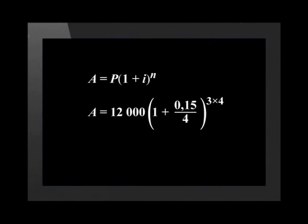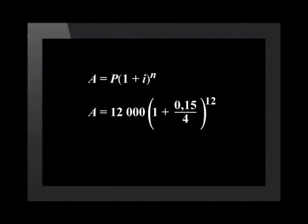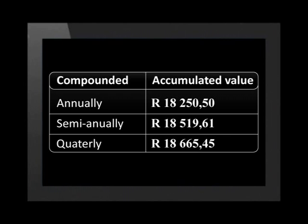Interest is calculated four times a year, so we divide the interest rate by four. A is equal to 12,000 times (1 + 0.15 divided by 4) to the power of 3 times 4, which is to the power of 12. Remember, we also multiply the number of years by the number of times the investment is compounded in one year. A equals 18,665 rand and 45 cents — the future value is even higher.